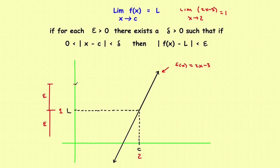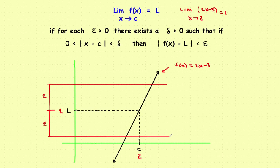Drawing horizontal lines from those epsilon points gives us the top and bottom of the box. Now somewhere over here, I have to pick a delta. Starting at c, I go some distance delta to the right and some distance delta to the left for this definition to hold. The question is: what should delta equal?